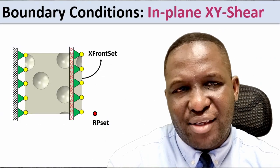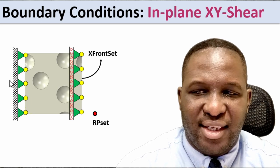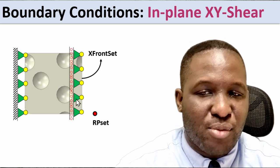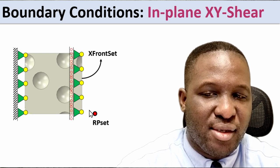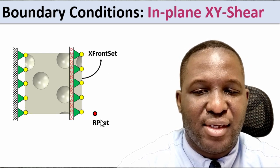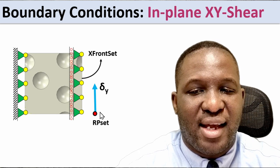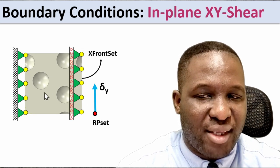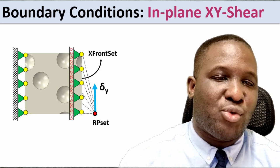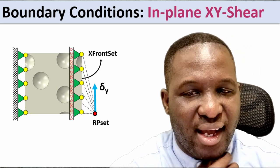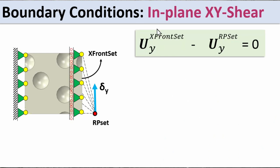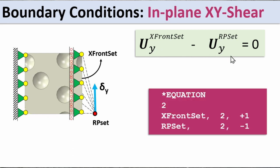For the shear case, a similar setup applies. The back end is securely fixed, and there's a roller support at the X-front set, since the face needs to deform in the Y-axis. The reference point is still used, but because we're looking at shear on the XY plane, the deformation is in the Y-axis. The same constraint equation approach applies, but now for the two-axis degree of freedom.